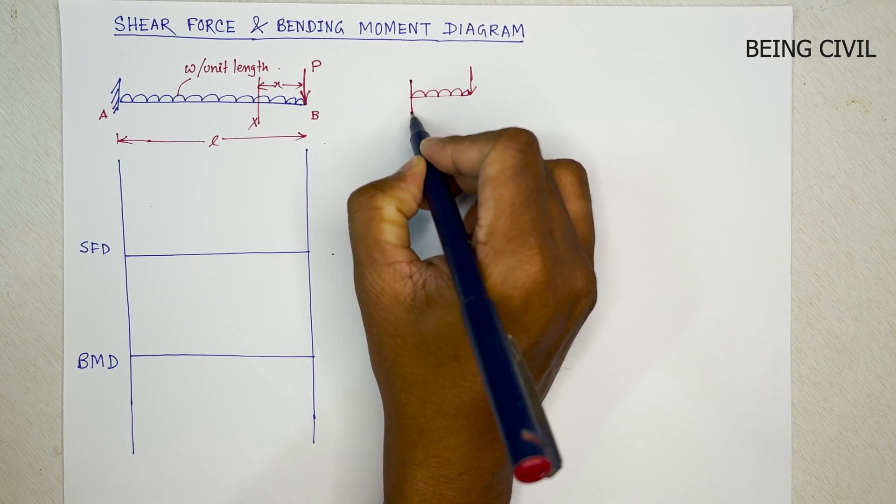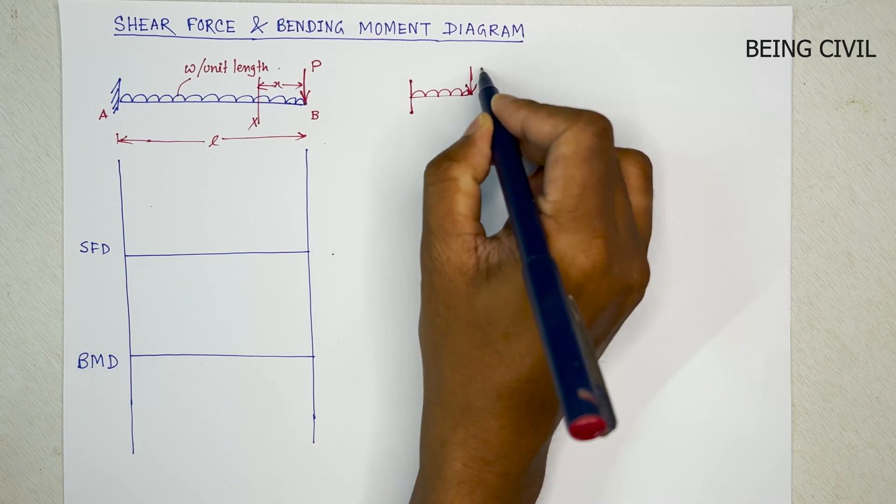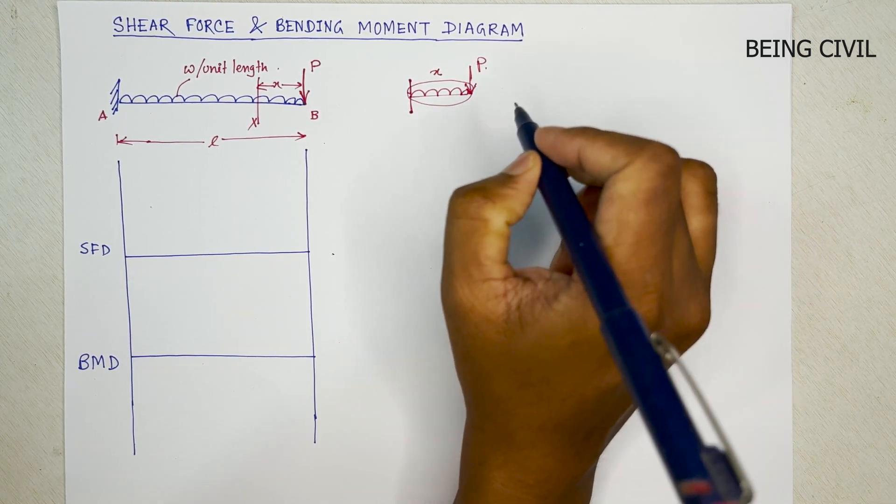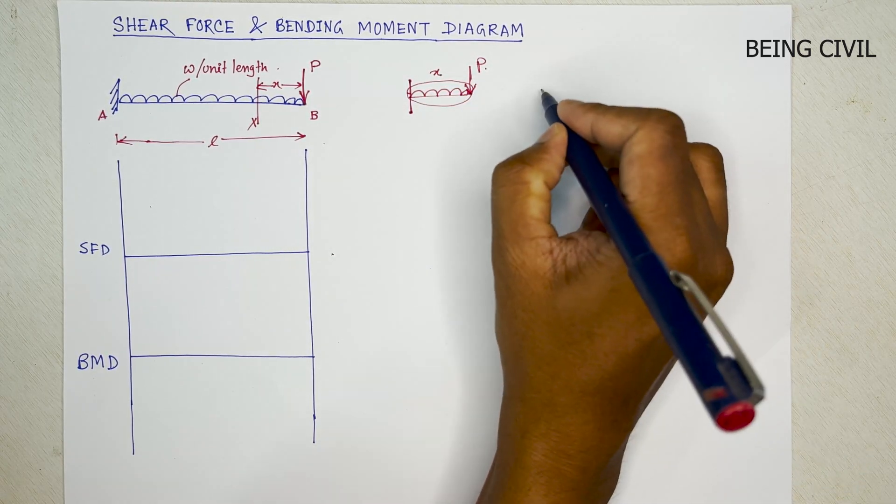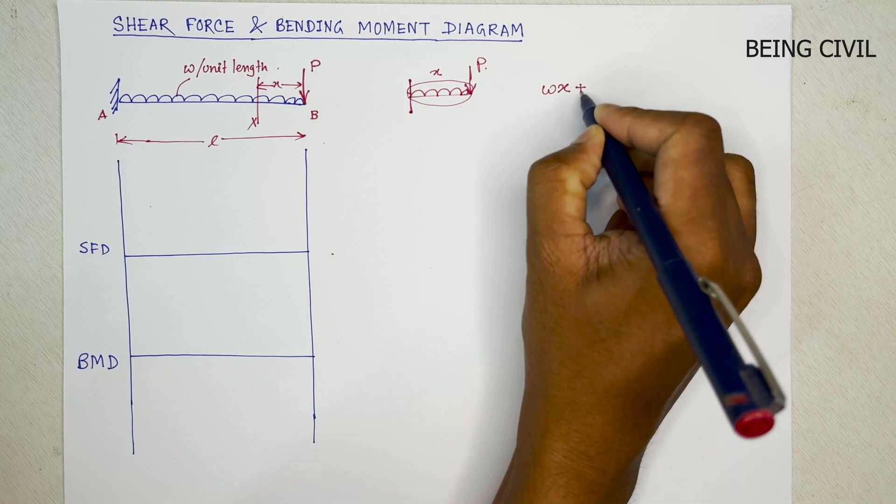So we have cut the section at this end. We will take the right side portion of this section. So this is P and this length is X. So the total load of this section is W into X plus P.